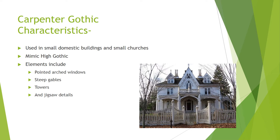The characteristics of Carpenter Gothic include elements like pointed arched windows, steep gables, towers, and jigsaw details. The style is used for small domestic buildings and small churches. The idea is to mimic the high Gothic styles used in the late medieval period on buildings like large churches.